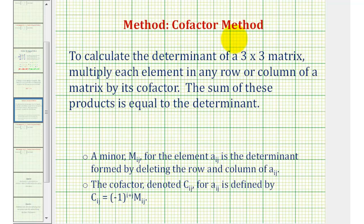Using the cofactor method to calculate the determinant of a three by three matrix, we multiply each element in any row or column of a matrix by its cofactor. The sum of these products is equal to the determinant.